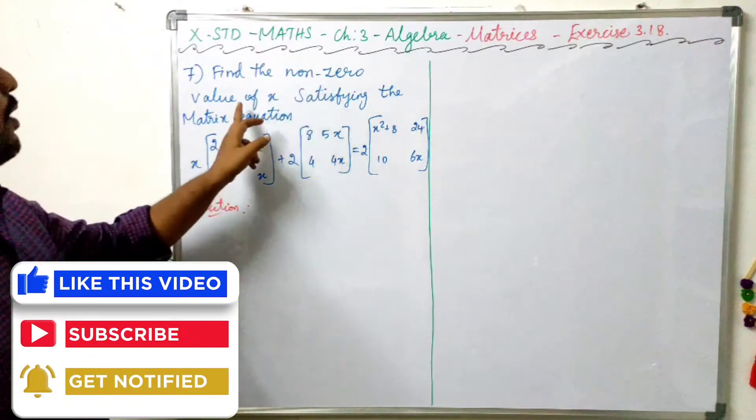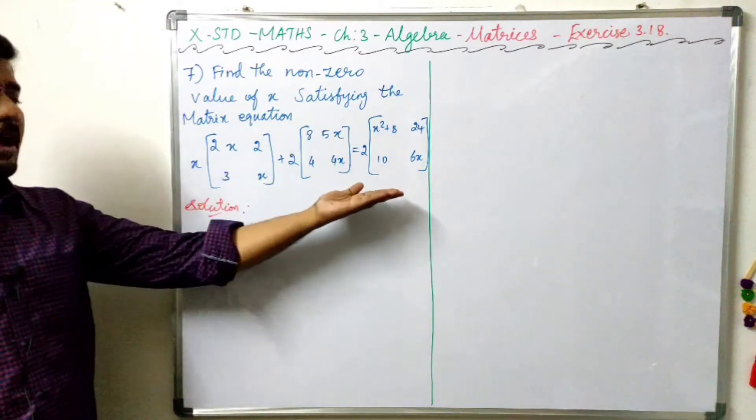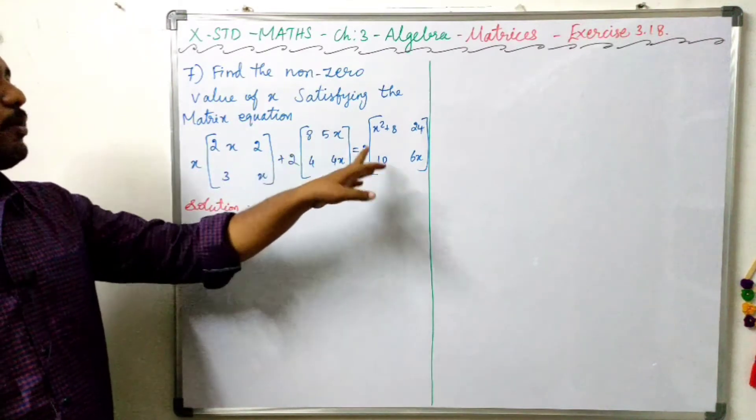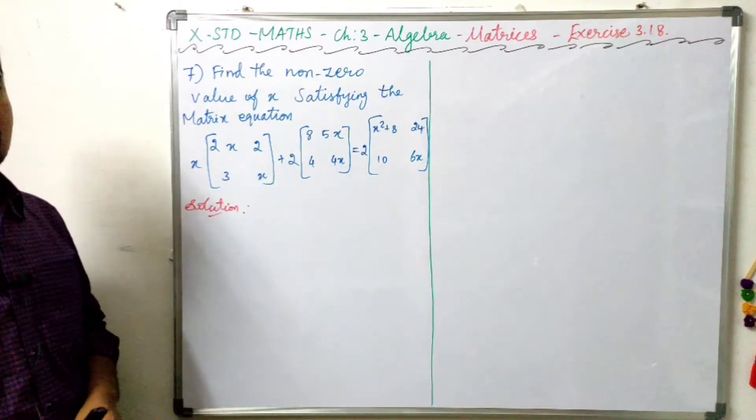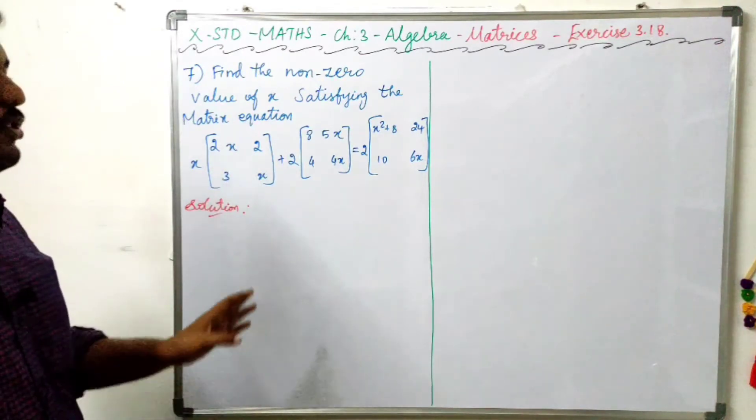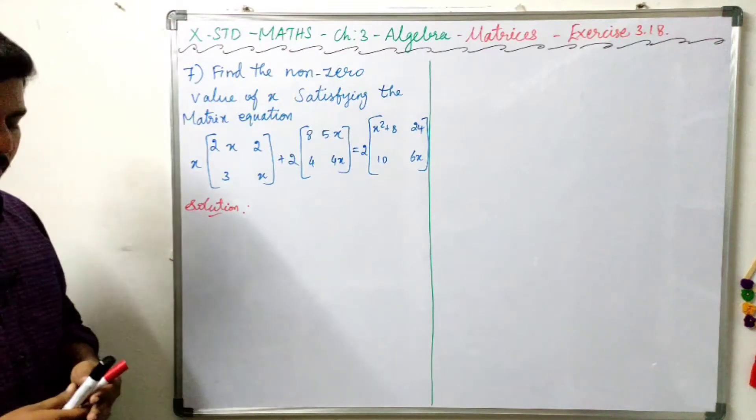Find the non-zero value of x satisfying the matrix equation. In this matrix equation, the answer will be x's non-zero value. If it is 0, then it will be 0. So 0 will be the same value.